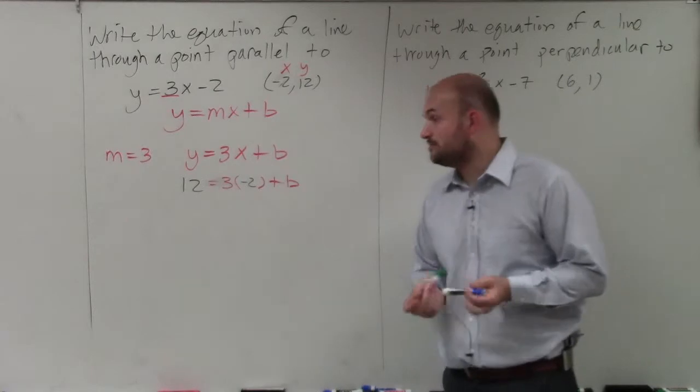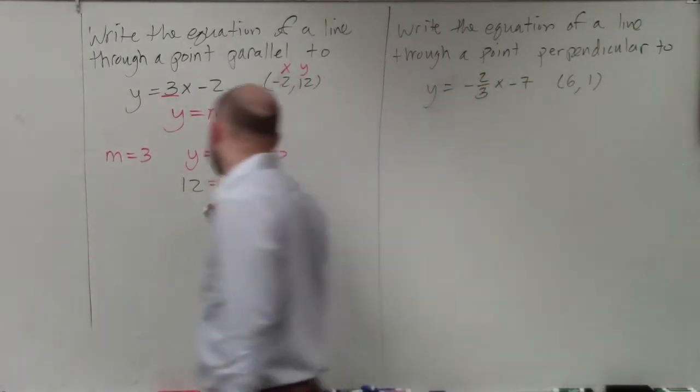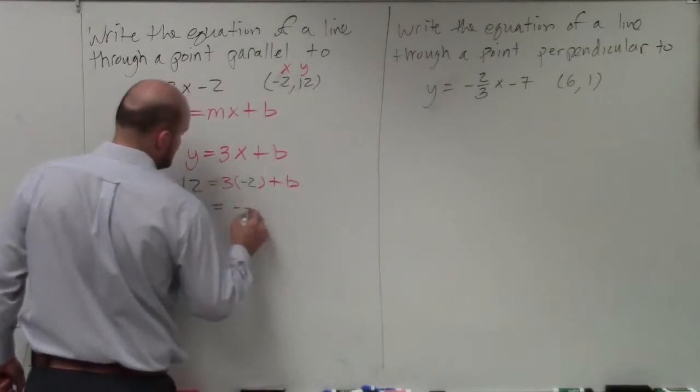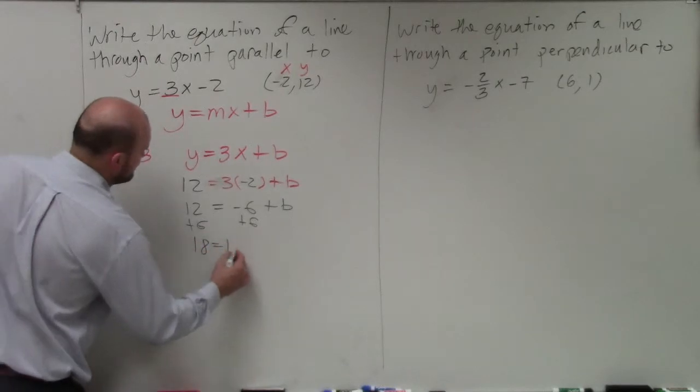OK. Now, I just need to find out what b is. So I basically multiply. 3 times negative 2 is going to be negative 6. So 12 equals negative 6 plus b, add 6, 18 equals b.